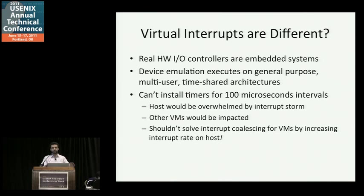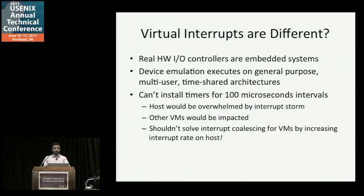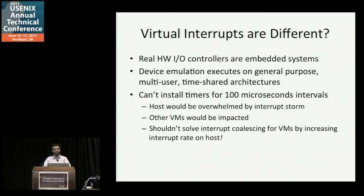We've talked about interrupts, their history, interrupt coalescing, and the parameters used. But how are virtual interrupts different? Real hardware I/O controllers are like little embedded systems with their own operating systems and timer support built in, executing independent of the main host processor. Unlike that, device emulation and virtualization executes on general-purpose multi-user, time-shared architectures — in our case, the x86. In these environments, we can't install high-resolution timers as a matter of course; technically we could, but the host would be overwhelmed by the resulting interrupt storm, severely impacting other processes and VMs. So let's promise ourselves not to install high-res timers to solve the VM interrupt coalescing problem. But then how would we solve it? With some neat tricks.